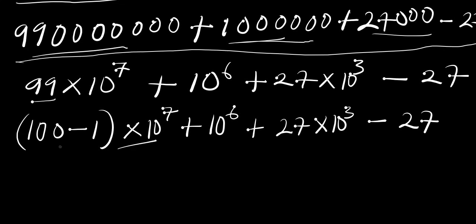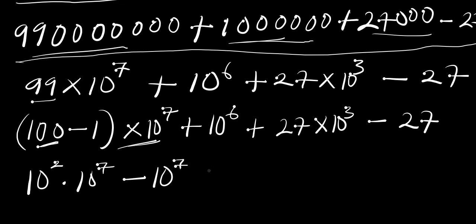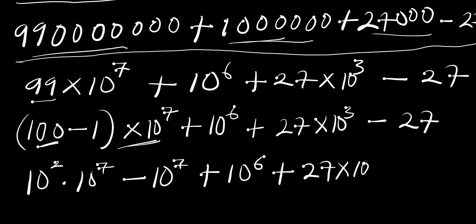99 is simply 100 minus 1, so we can write it as (100 minus 1) times 10⁷. Now 100 is 10², so we have 10² times 10⁷, which gives 10⁹, then minus 10⁷, plus 10⁶, plus 27 times 10³, then minus 27.